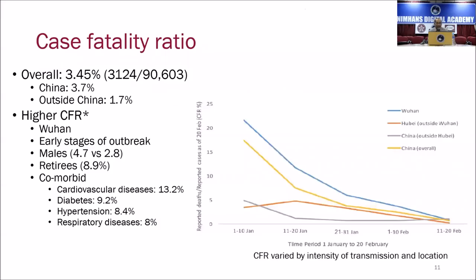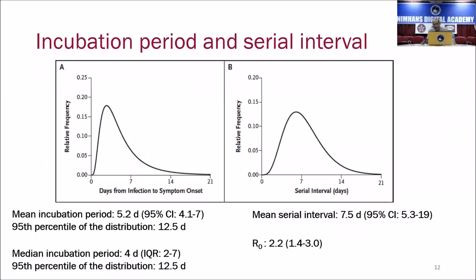What about the fatality ratio? The overall crude fatality ratio across the globe is between 3 to 5%. The mortality in Italy is far more than what was reported in China. Initially when the pandemic hits a country, they are not prepared and do not have protocols in place. Initially in China, mortality was as high as 23-24%. But the moment they started isolating patients and taking care of them systematically, the mortality came down by the 11th of February to about 3-4%.